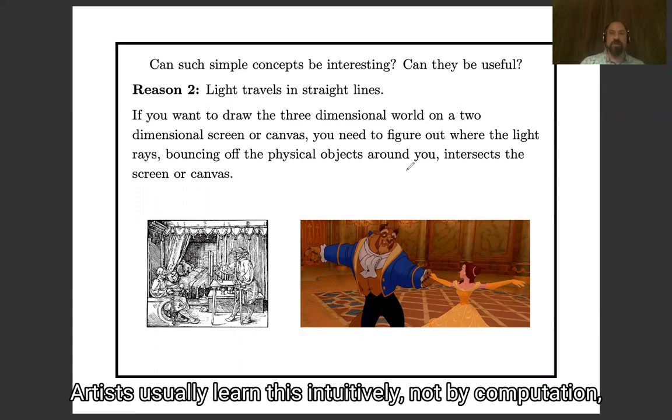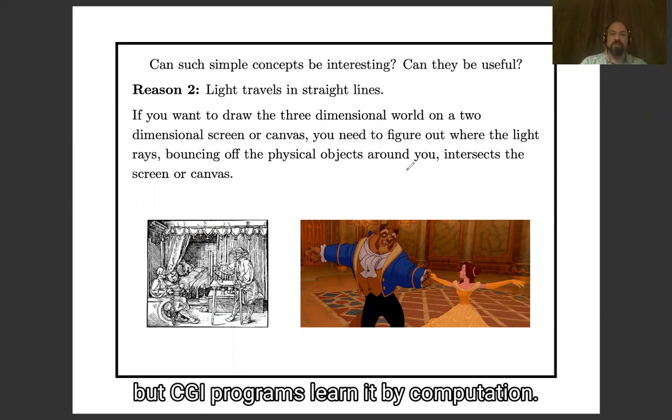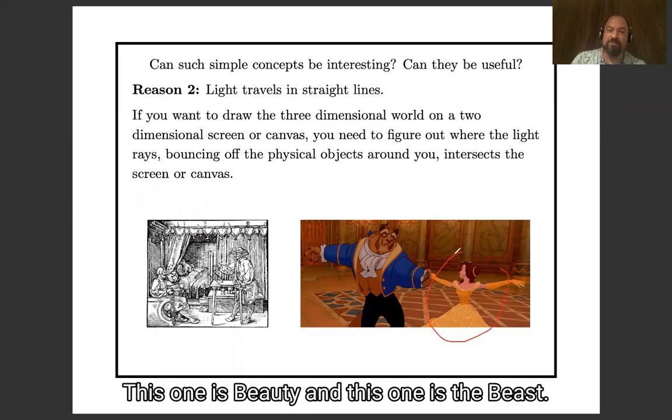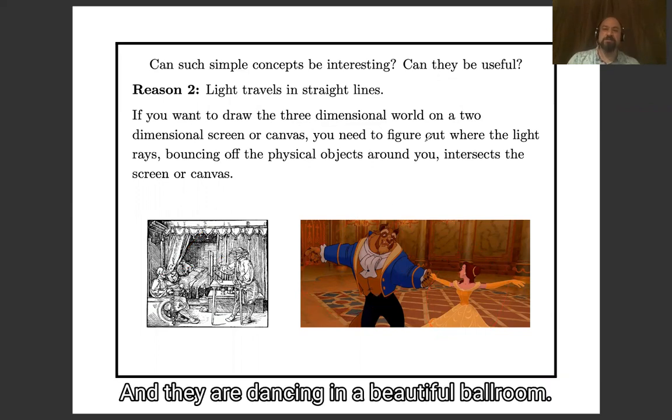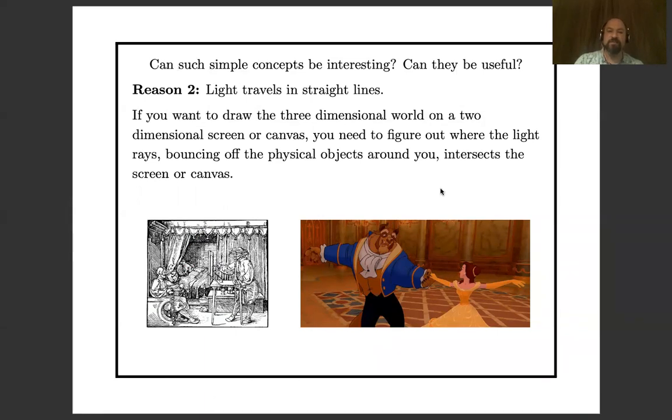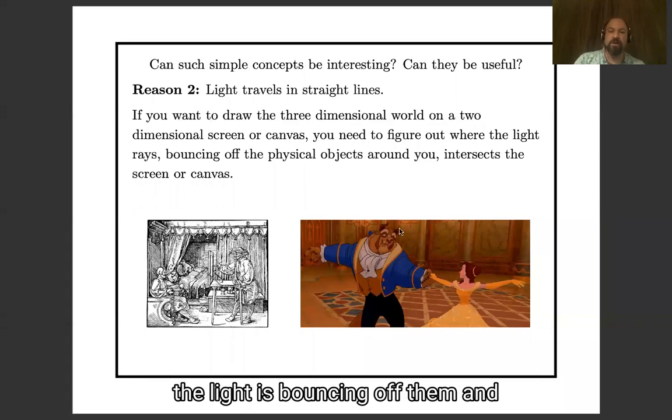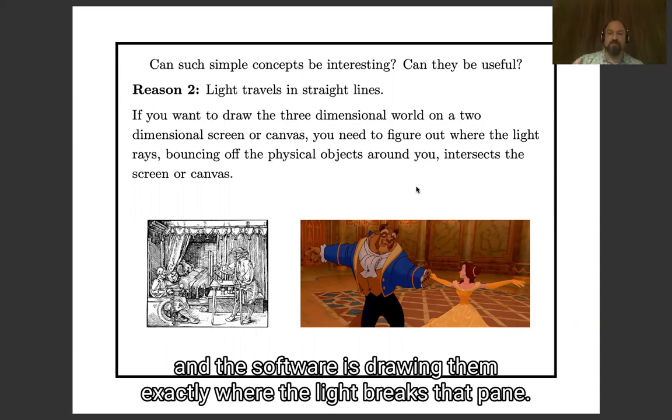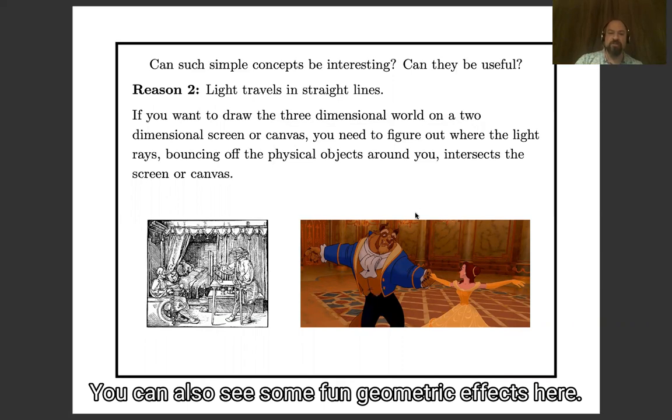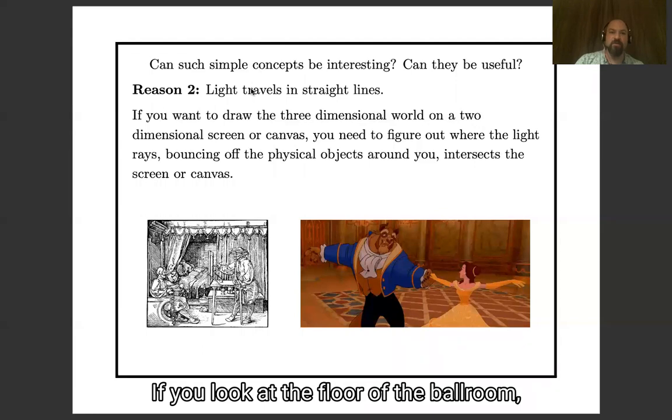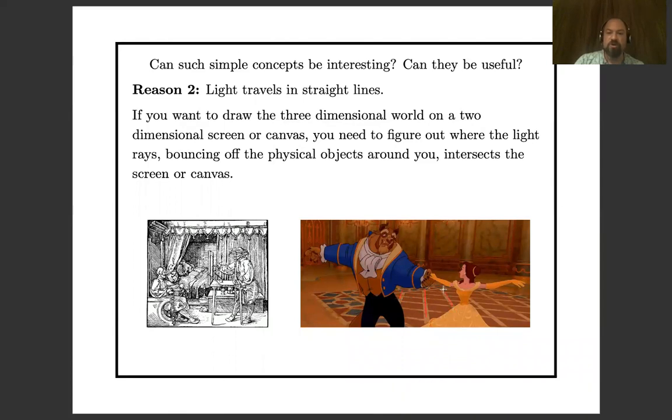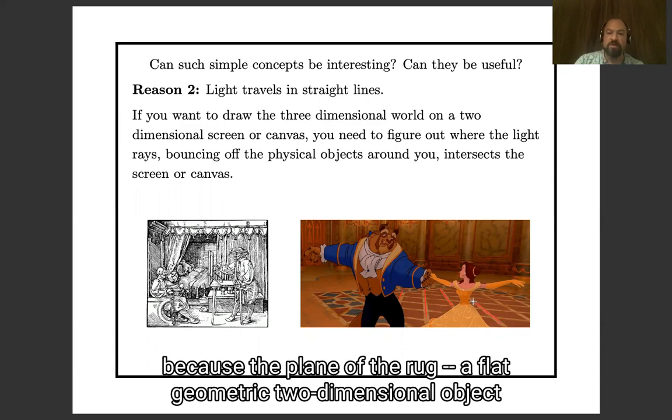Artists usually learn this intuitively, not by computation, but CGI programs learn it by computation. So what you see over here is Beauty and the Beast. This one is Beauty and this one is the Beast. And they are dancing in a beautiful ballroom. And as they are dancing, the light is bouncing off them, and bouncing into the lens of the virtual camera, and breaking an imaginary pane in front of the virtual camera. And the software is drawing them exactly where the light breaks that pane. You can also see some fun geometric effects here. If you look at the floor of the ballroom, you'll see a rug, and the rug has some parallel lines on it. But they don't look parallel to you. They look like they meet at some point out in the distance.